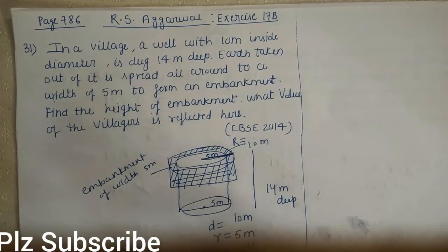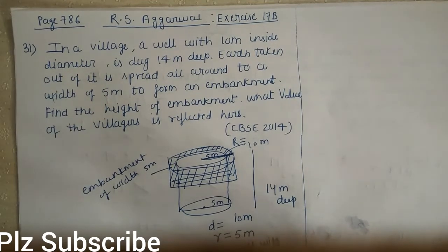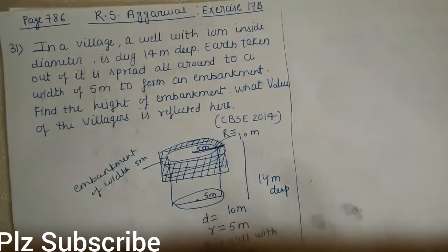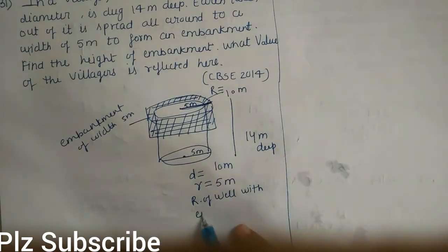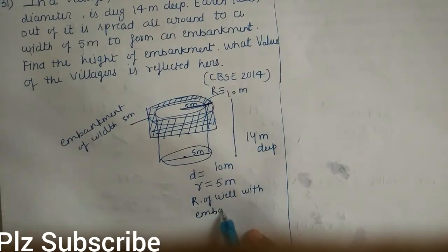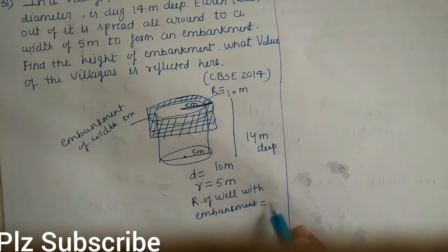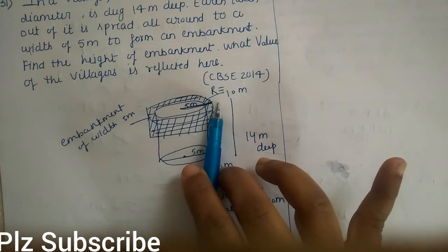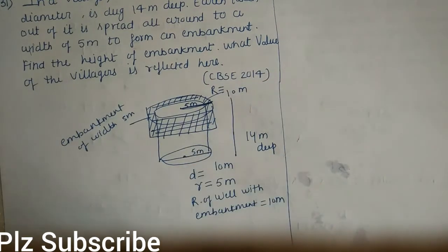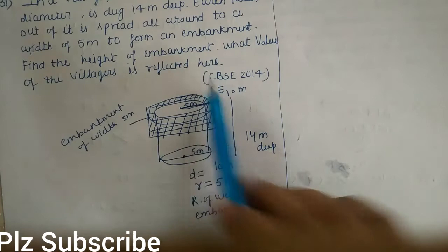The radius of the well with the embankment: the radius of the well is 5 meter, plus the embankment width of 5 meter, so the total radius with embankment becomes 10 meter. Now we need to find the height of the embankment.